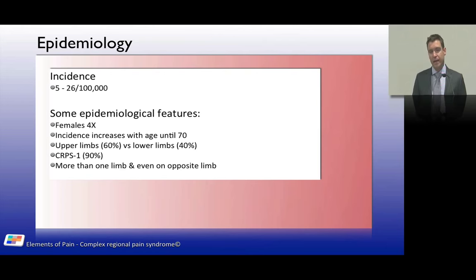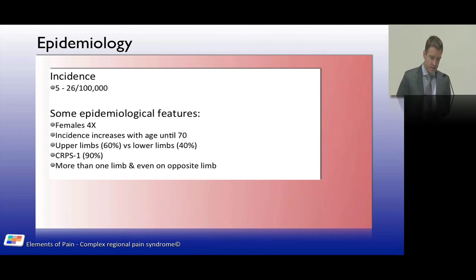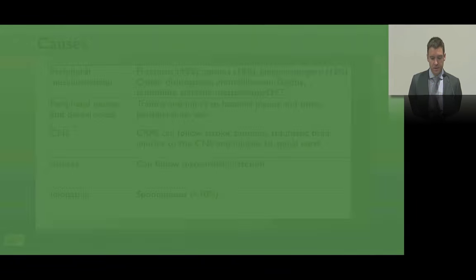Regarding epidemiology, the incidence of CRPS can be anywhere between 5 and 26 per hundred thousand depending on the paper. It occurs more in females, incidence increases up to about 70 years of age, and it is generally a condition of upper limbs — 60% — compared to lower limbs — 40%. Essentially, when people talk about CRPS they're talking about CRPS type 1, which occurs in 90% of cases. It can occur on more than one limb or on opposite limbs.